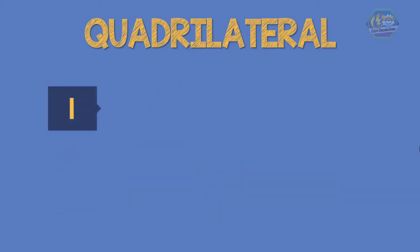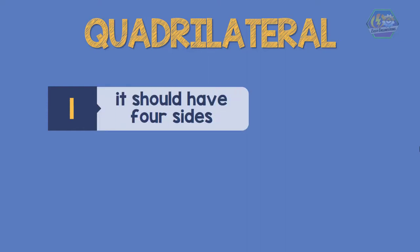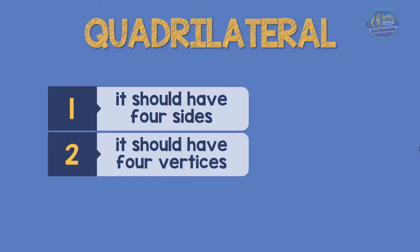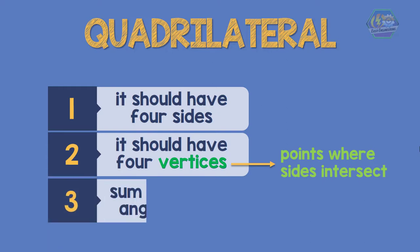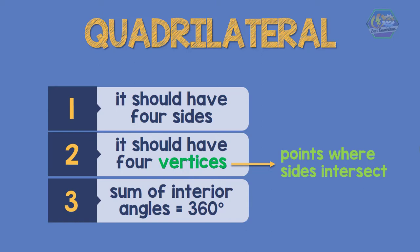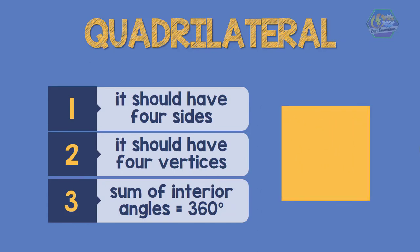The first property of a quadrilateral is that it should have four sides. The second property is that it should have four vertices — vertices are the points where the sides intersect. And lastly, the sum of the interior angles of a quadrilateral should be equal to 360 degrees. Now take a look at this square.